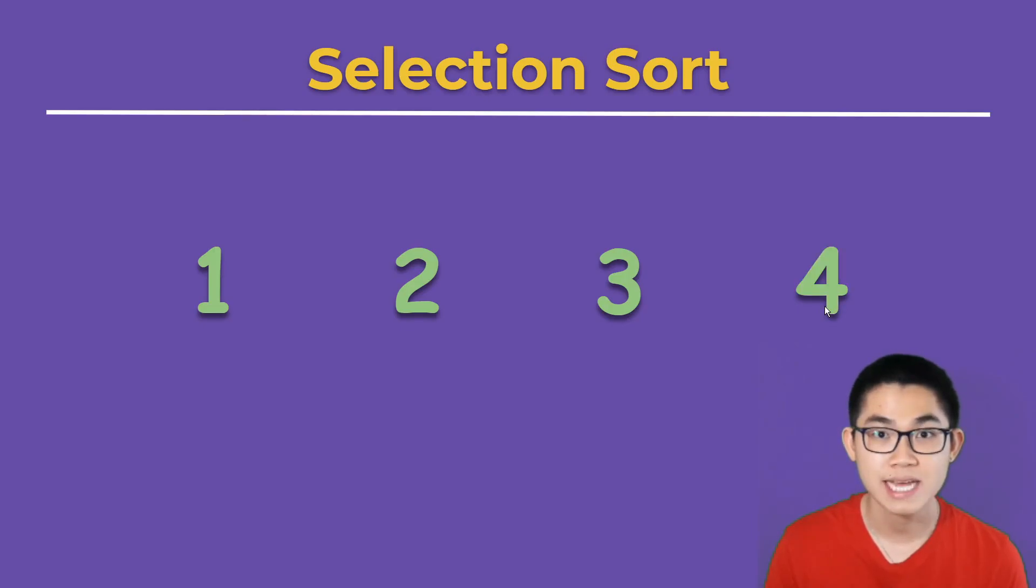Now, notice that A only goes from the first number to the second last number. It does not go on to the last number. Because if A goes here, then B will be indexed out of bounds.